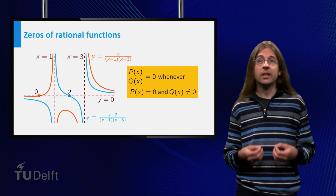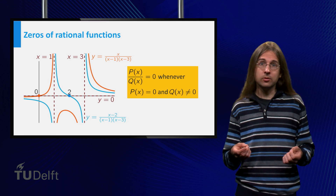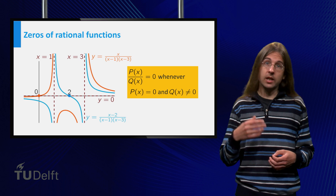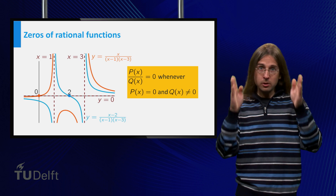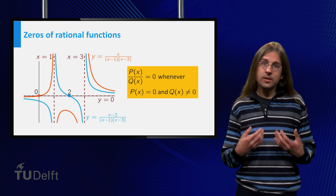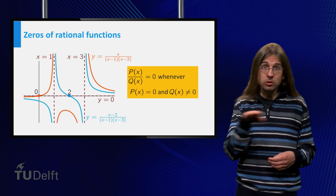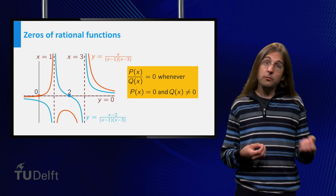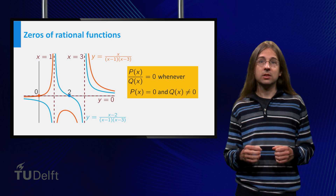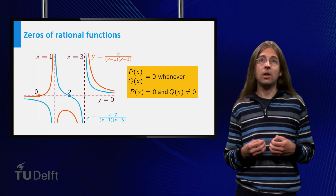The locations of the zeros can heavily influence what the graph of a rational function looks like. For example, compare (x minus 2) over ((x minus 1)(x minus 3)) to x over ((x minus 1)(x minus 3)). Both graphs have vertical asymptotes at x equals 1 and x equals 3, the zeros of the denominator. Since the degree of the numerator is less than the degree of the denominator, both graphs have a horizontal asymptote at y equals 0. But the first function has a zero in between the two asymptotes at x equals 2, and the second function has a zero to the left of either asymptote at x equals 0. Therefore, the two graphs are quite dissimilar.